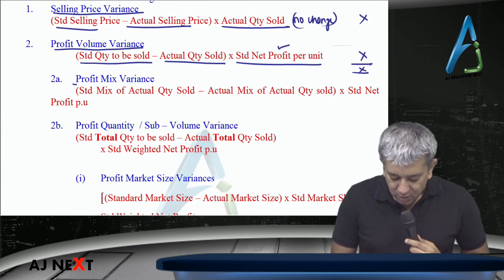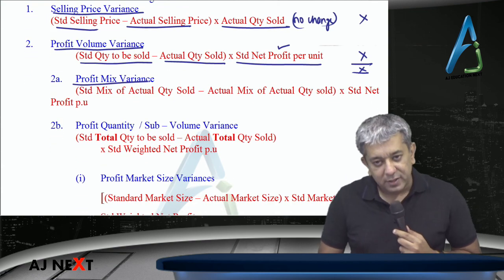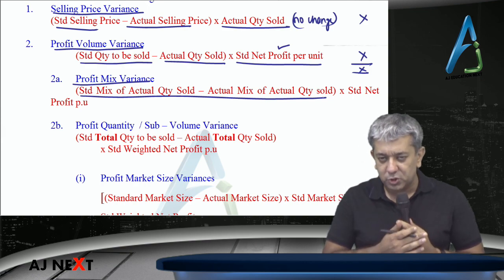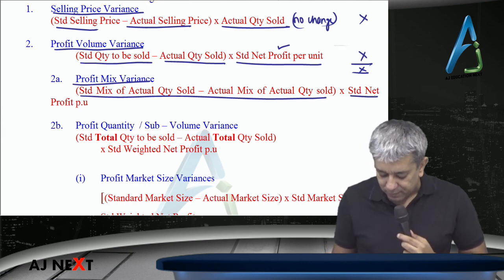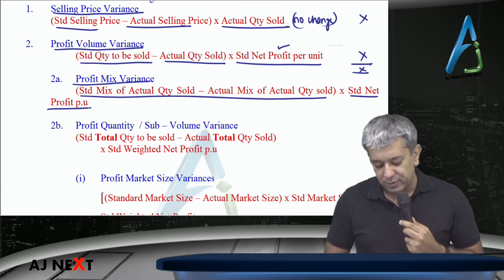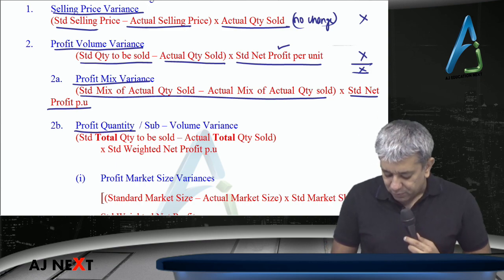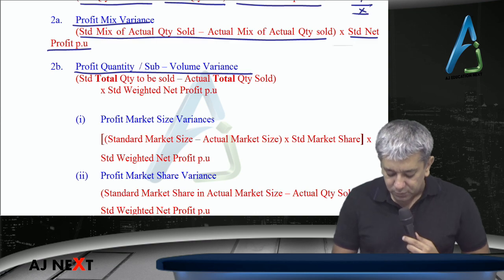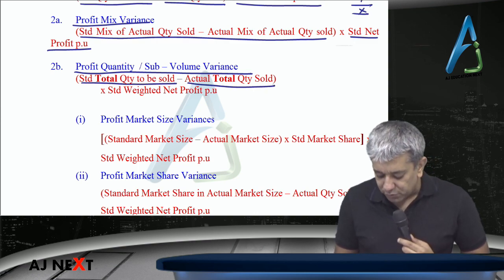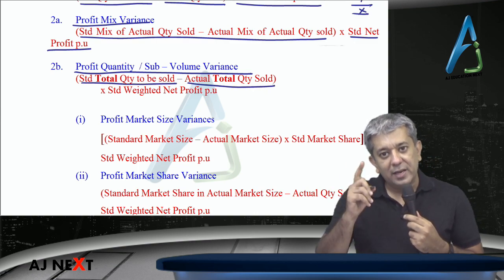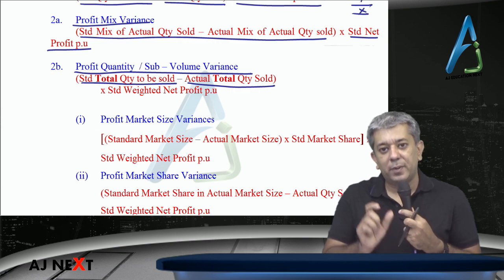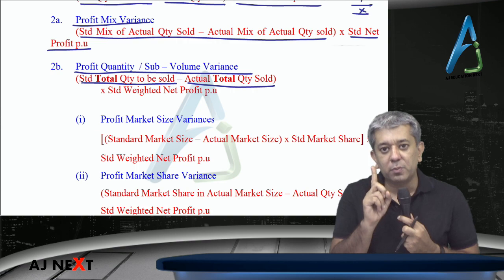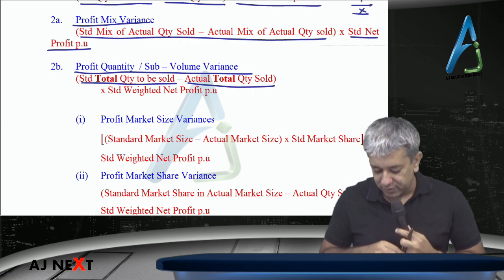Next is profit mix variance. The bracket inside is the same as it was under sales mix variance in your previous lecture — outside, multiply by standard net profit per unit. After that, profit quantity or sub-volume variance: overall units that should have been sold minus overall units actually sold. Previously in sales quantity, you multiplied by standard weighted average selling price. Now you multiply by standard weighted average net profit per unit.